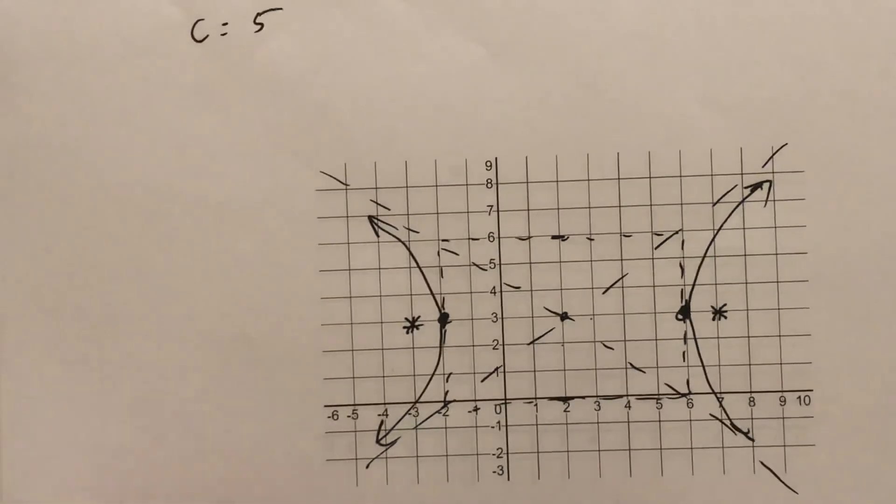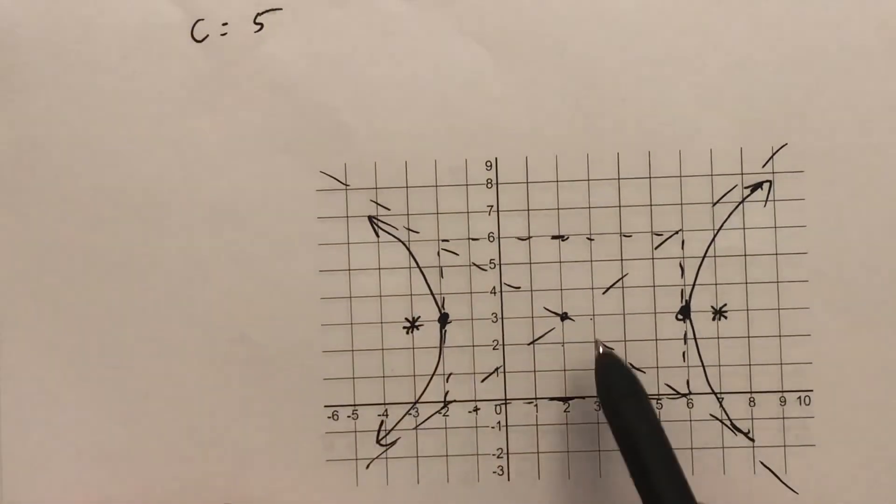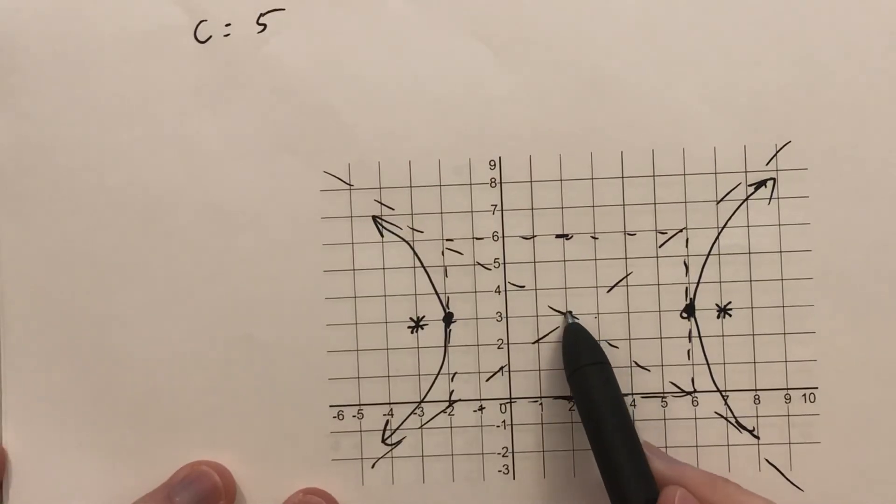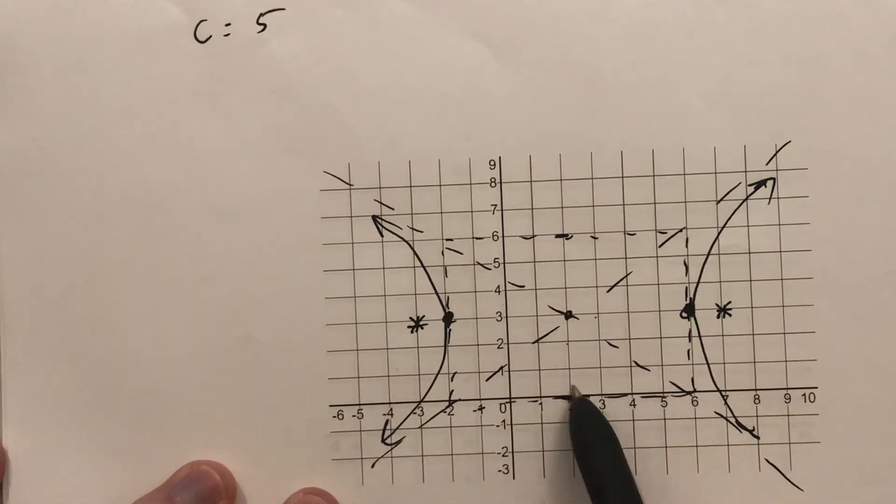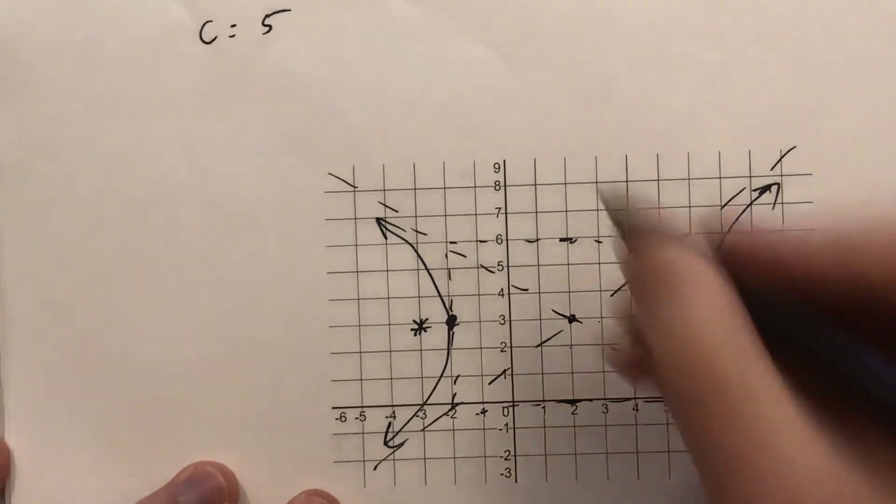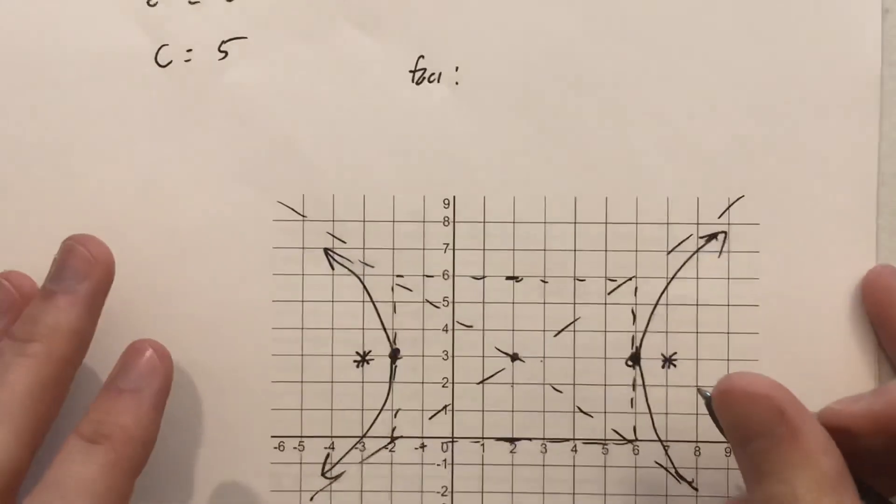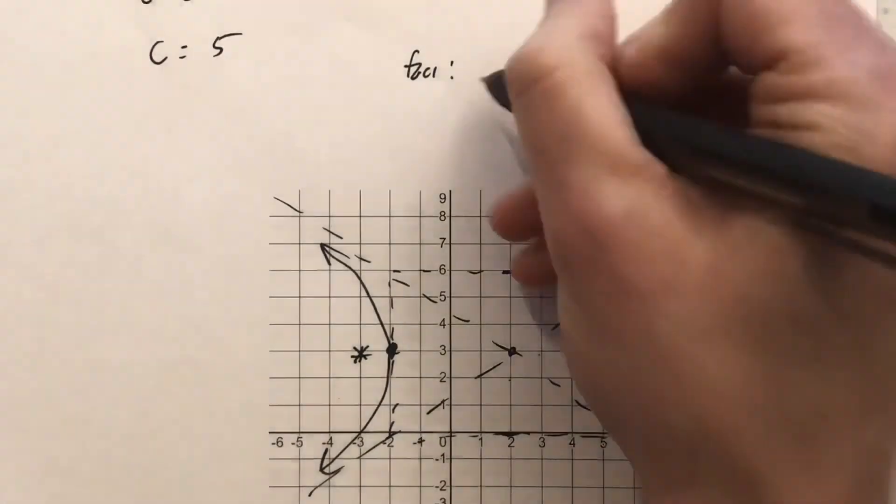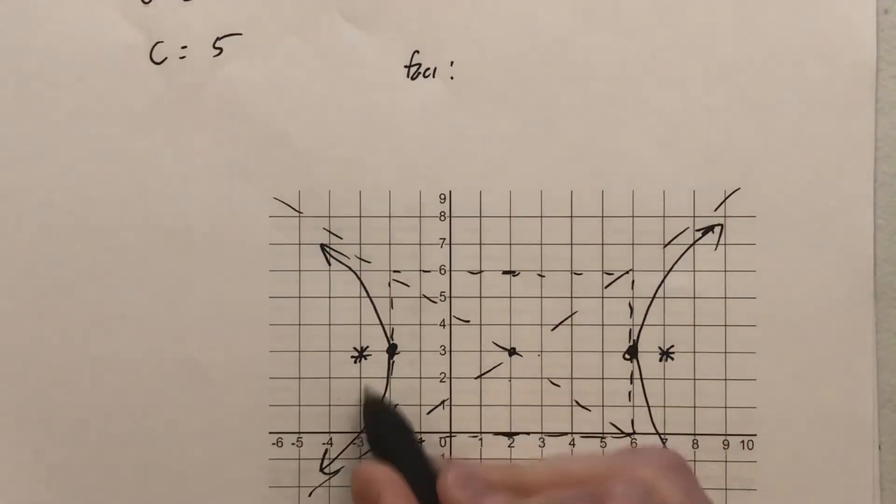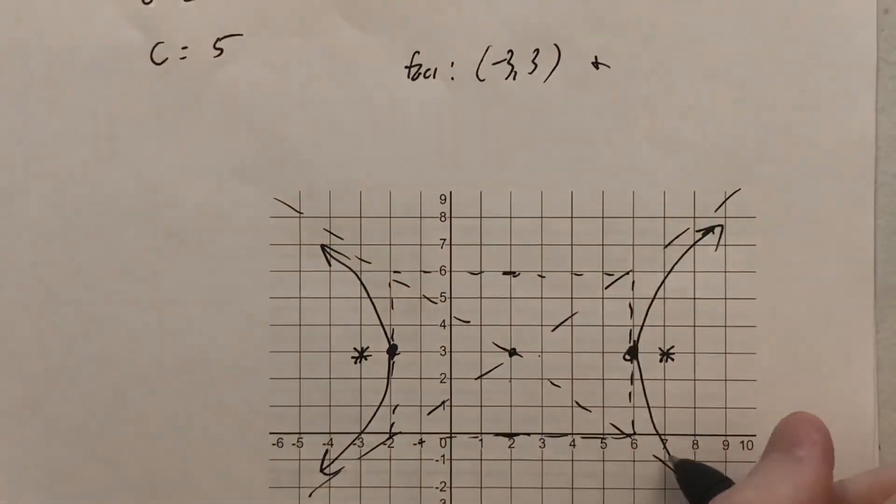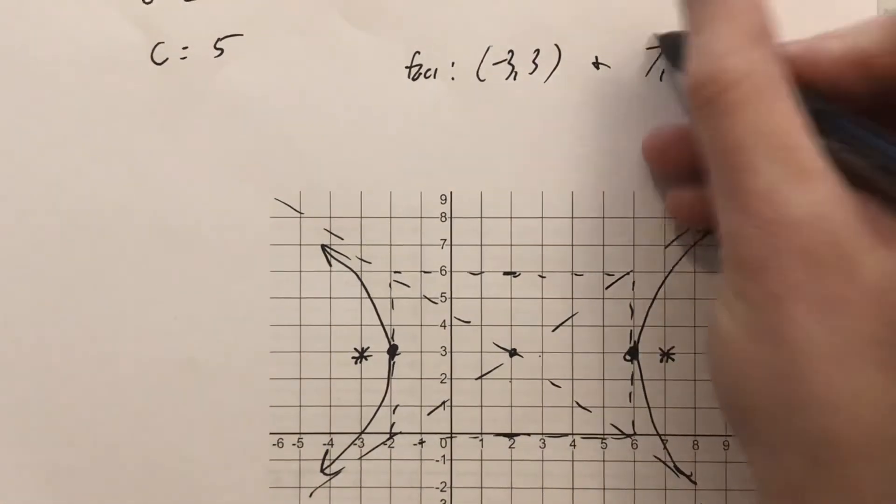And so in this case, it's actually convenient, since c was a nice number, we can just say the center was at 2, 3, but now we have to add and subtract 5 from the 2, right? But we can actually do that and get nice numbers. So the foci, I can get that on the page there, yep, foci for this graph are going to be at the points of negative 3 comma 3 and 7 comma 3.